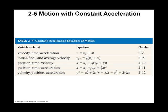The second position function doesn't have final velocity in it. And the last function, vf squared equals vi squared plus 2ax, doesn't have anything about time in it.